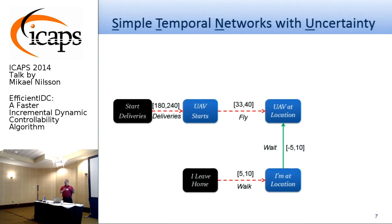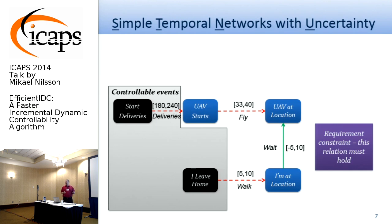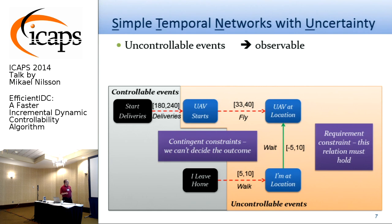We also have this requirement of five and ten minutes of waiting. In this formalism, we have controllable events, which we can decide exactly when we want to execute. We also have requirement constraints. In an STN, a simple temporal network, you can control all the events. But in a more realistic setting, you cannot. So we have uncontrollable events, which are the blue ones. For instance, Amazon may decide when they start the UAV in the morning and it makes several runs, but they cannot decide exactly when they will start my delivery. These are uncontrollable events — we cannot affect them, but we can observe them — and we use these observations to try to prevent the requirement constraints from being violated at execution time.